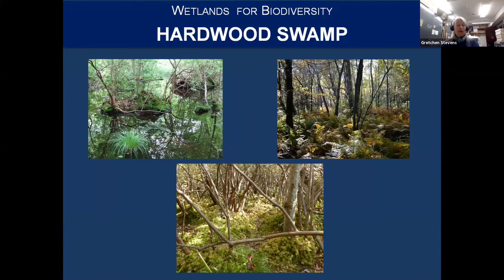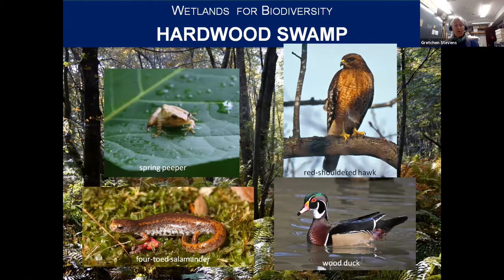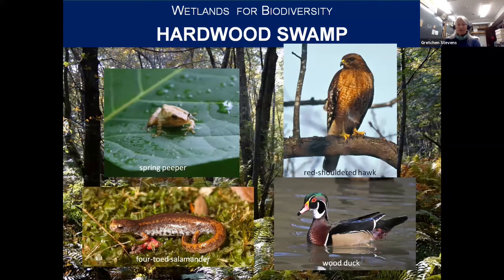Like other forested habitats in the region, hardwood swamps support a wonderful array of wildlife, including frogs, salamanders, sometimes fish, snakes, and nesting songbirds and raptors. White-tailed deer forage in swamps, and bobcat, foxes, and coyotes hunt for mice, voles, and other small animals. Wood duck often nests in tree cavities of hardwood swamps, and red-shouldered hawk — a threatened species in New York — seems to prefer nesting in or near swamps that are part of large forested areas. Four-toed salamander, uncommon in the region, hangs out in swamps with lots of moss-covered logs and rocks.